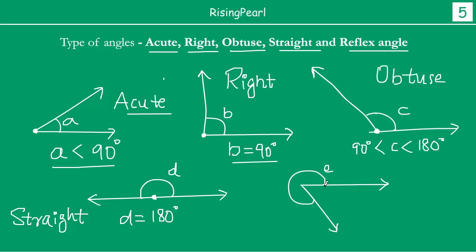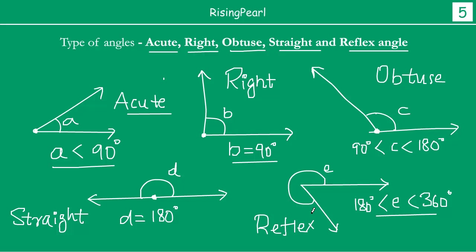And finally, this one — if you have a straight line it would have been 180, but this measure is actually more than 180 and less than 360. If you go all the way around it would be 360. So E is actually more than 180 degrees but less than 360 degrees. So this one is a straight angle, and this is a reflex angle.